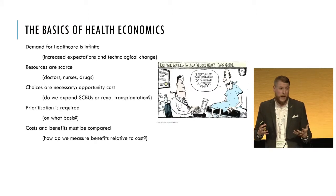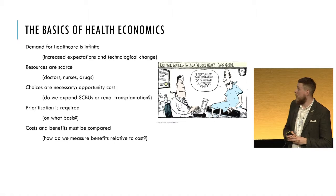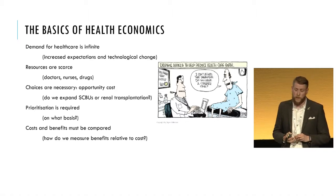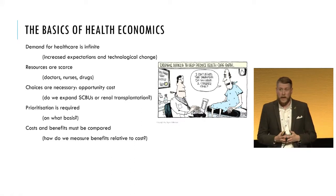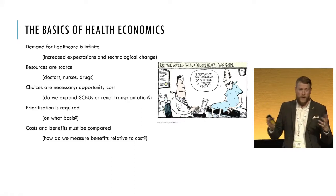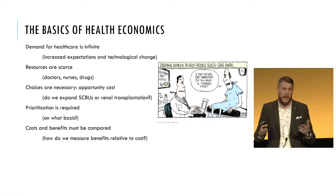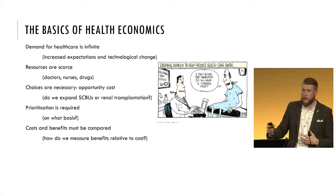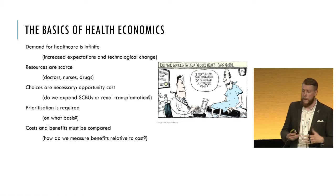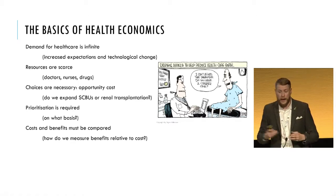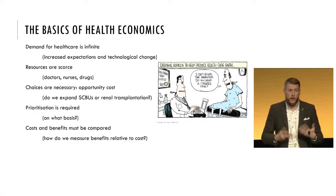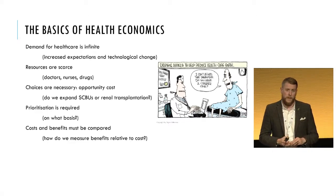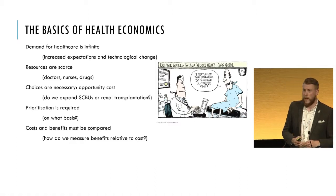There are some key components of health economics which fall into five general topics. Firstly, demand for healthcare is infinite — not that it goes on forever, but essentially because resources are scarce and there isn't unlimited money going into healthcare services, people's demand for healthcare will always be higher than the resources available to provide it. This is partly down to people's increasing expectations and also the fact that people are living longer and living longer with chronic illness.